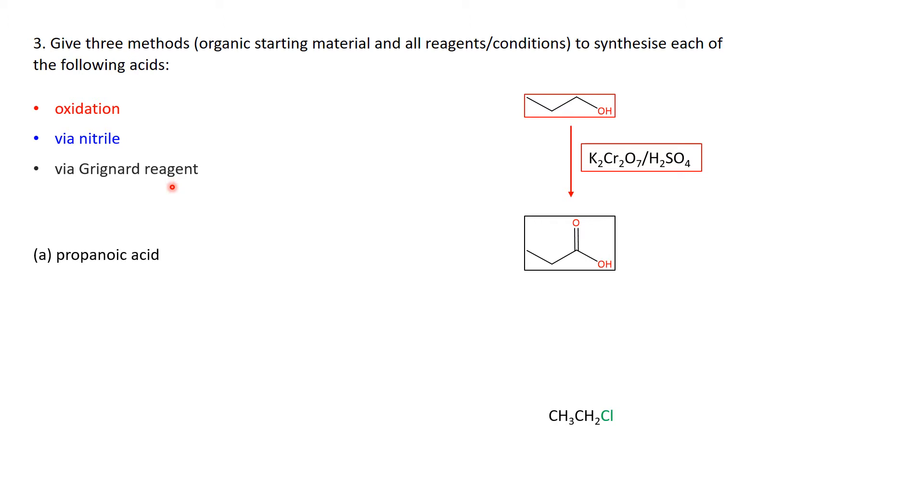Now let's, by a nitrile or Grignard reagent, the starting material is going to be an alkyl halide, a haloalkane. And I'm going to pick here ethyl chloride or chloroethane to do this. First thing I can do is I can bring in an extra carbon by reacting this up with cyanide. So now I've got a one, two, three carbon compound with this nitrile here. And once I've got that nitrile group, I can acid hydrolyze it with heat, H+ with heat to turn the nitrile group into the acid group.